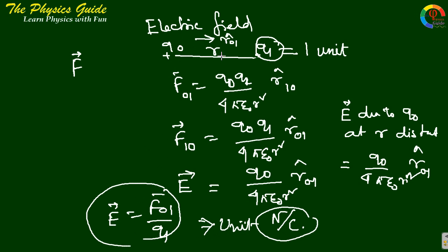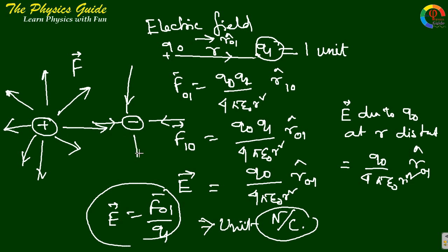Electric field obviously has a direction. If this is a positive charge then this is the outward direction R01. So for a plus charge, this is the direction of electric field line. If it is a negative charge, their direction will be opposite.